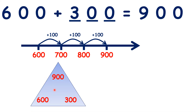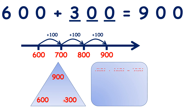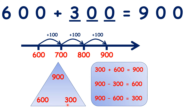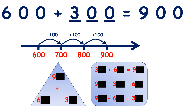We can draw a number family triangle, and because we know that 600 plus 300 is 900, we also know 3 related facts. We know that 300 plus 600 is 900, 900 minus 300 is 600, and 900 minus 600 is 300. We can see that because we have multiples of 100 — 600, 300, and 900 — our number family facts are very similar to our facts for 6, 3, and 9.